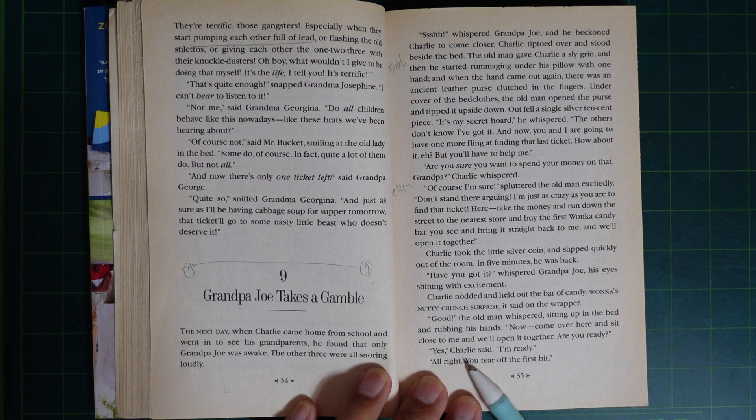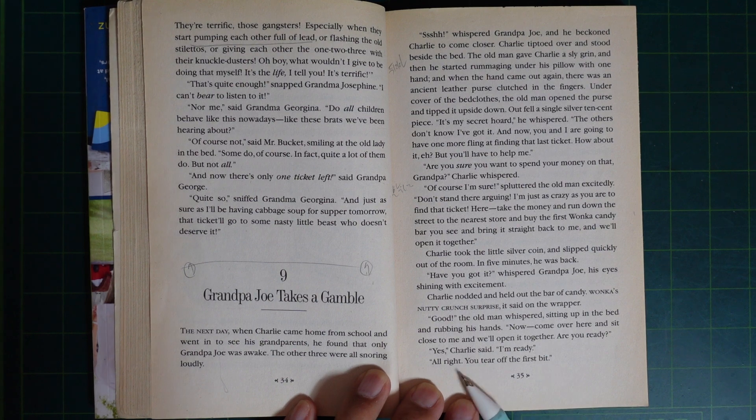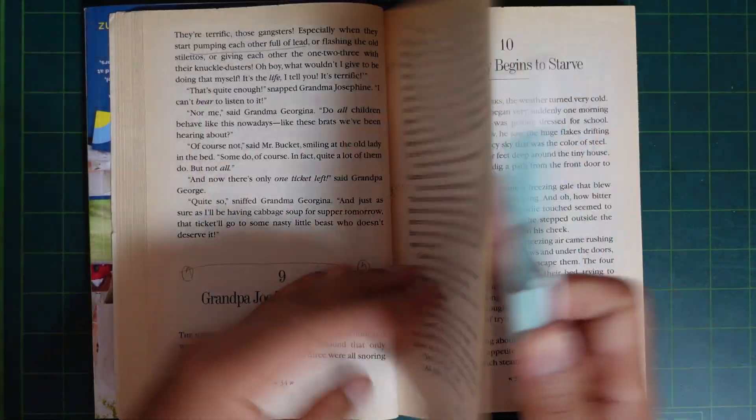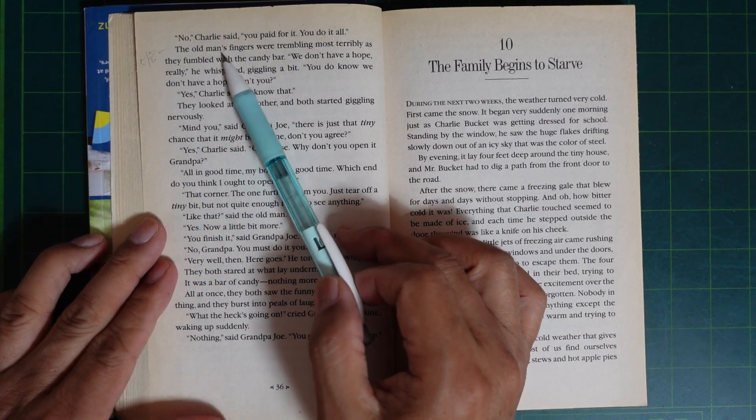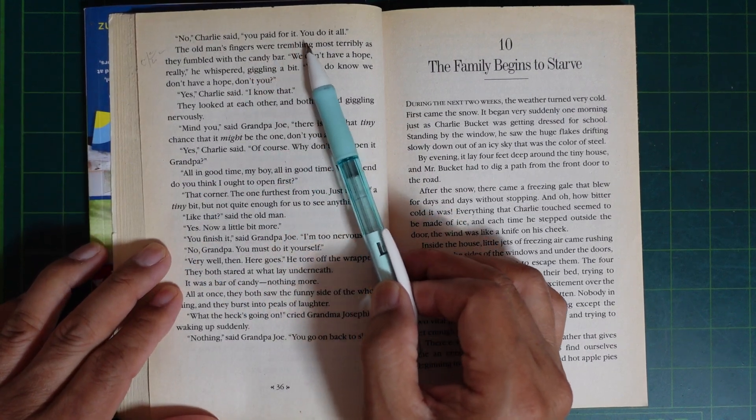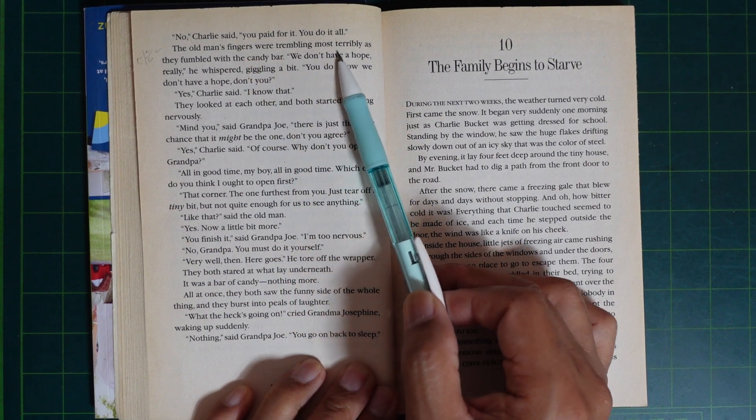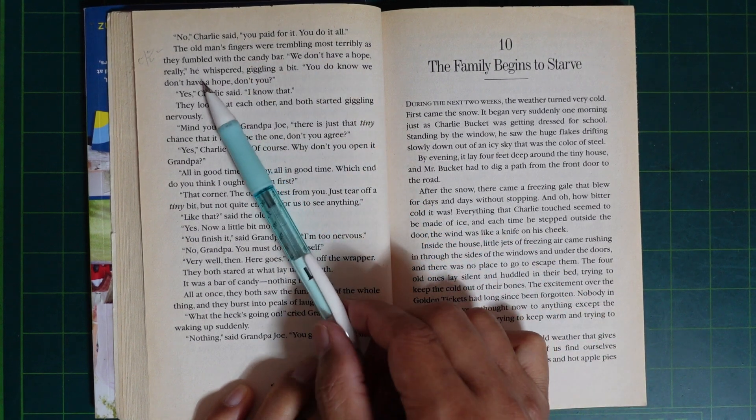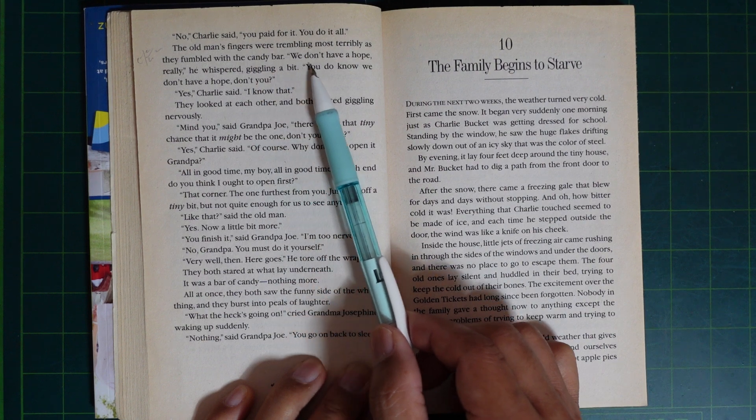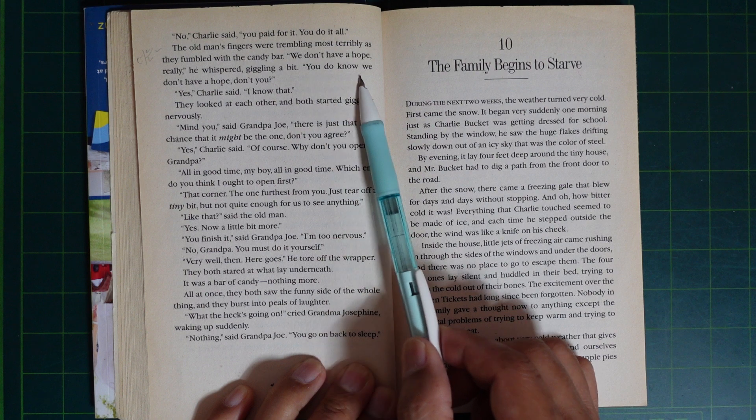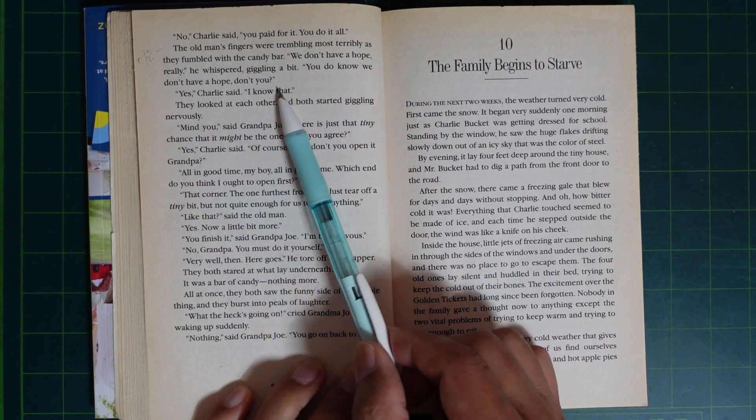All right. You tear off the first bit. No, Charlie said. You paid for it. You do it all. The old man's fingers were trembling most terribly as they fumbled with the candy bar. We don't have a hope, really, he whispered, giggling a bit. You know, we don't have a hope, don't you? Yes, Charlie said. I know that.